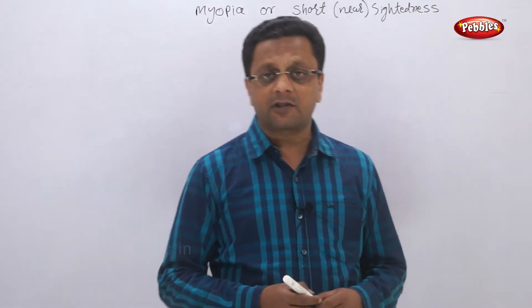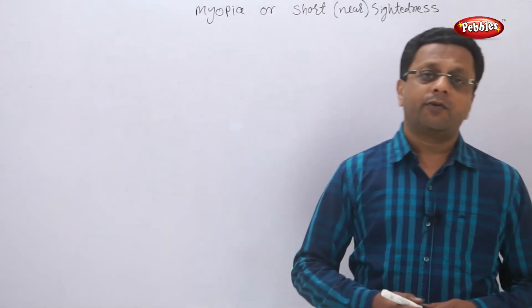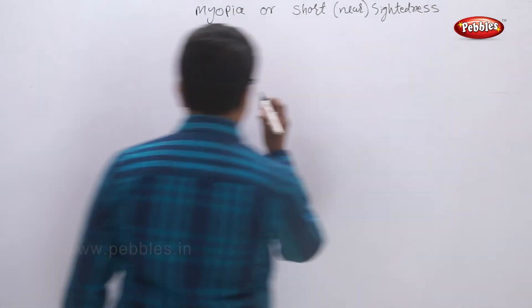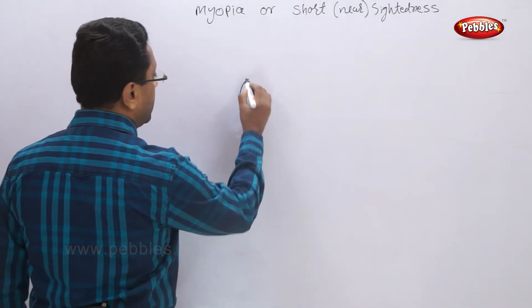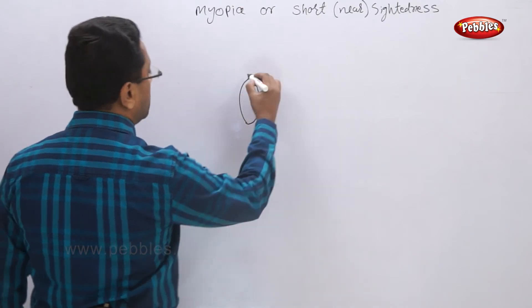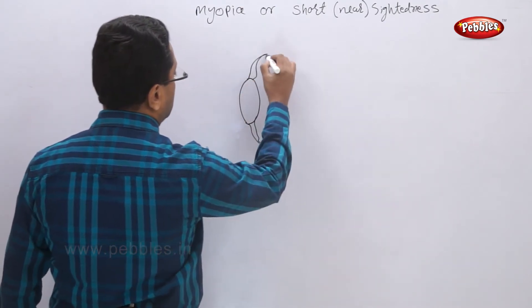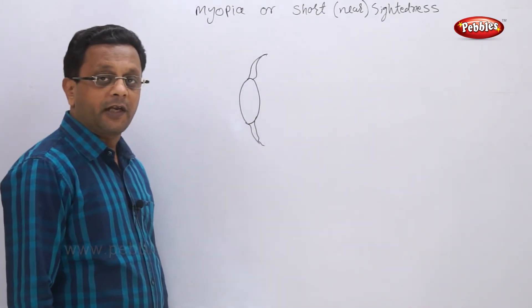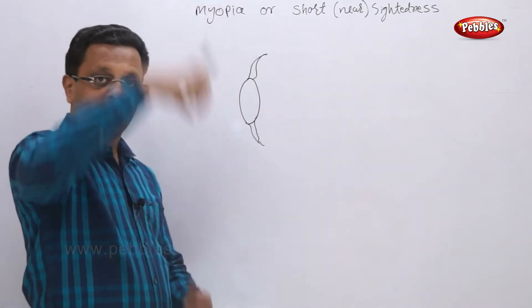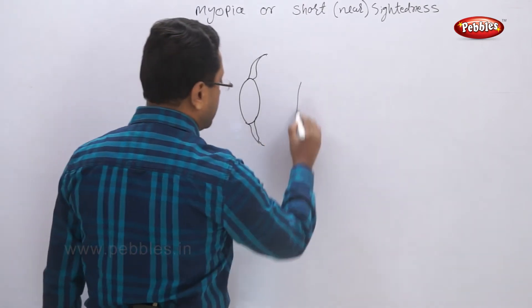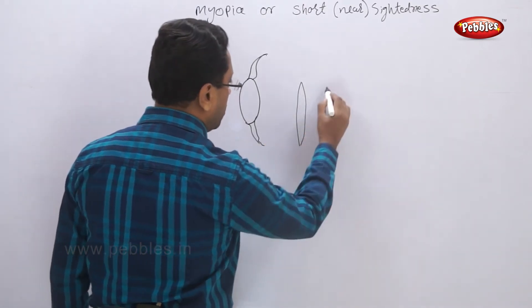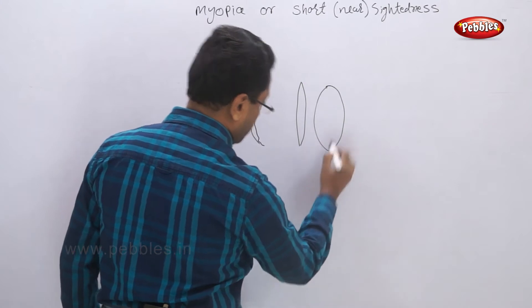So when the ciliary muscles cannot relax properly what will happen? What is the use of ciliary muscles? See your lens is something like this. Ciliary muscles are here. What is the work of ciliary muscles? They press or stretch, that means your lens either becomes thin or bulging.